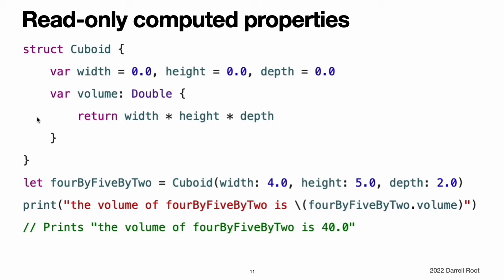This example defines a new structure called Cuboid, which represents a 3D rectangular box with width, height, and depth properties. This structure also has a read-only computed property called volume, which calculates and returns the current volume of the cuboid. It does not make sense for volume to be settable because it would be ambiguous as to which values of width, height, and depth should be used for a particular volume value. Nonetheless, it is useful for a cuboid to provide a read-only computed property to enable external users to discover its current calculated volume.